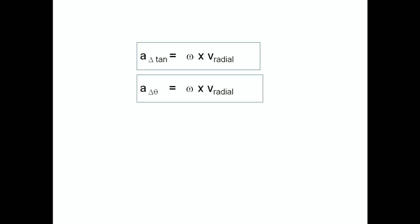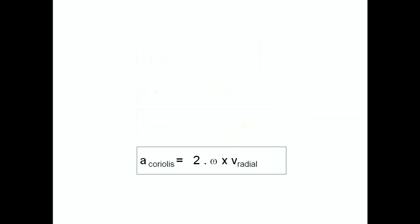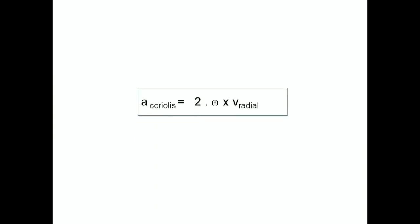Since both derived accelerations are pointing in the same direction, they have a cumulative effect, and their vectors can be added together. This results in a single expression, a = 2 × ω × the radial velocity. We have arrived at the Coriolis acceleration.